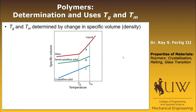We look at specific volume — or equivalently density — to define these temperatures. Only the top two curves are valid for polymers because we can't create a 100% crystalline polymer. So every polymer is either going to be glassy or amorphous, or it's going to be semicrystalline with both crystalline and amorphous components.